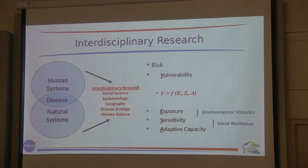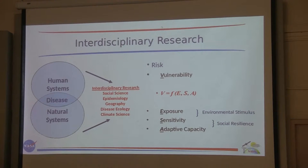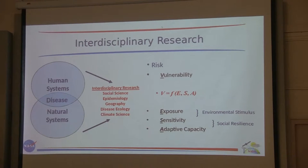All of this requires interdisciplinary research because diseases sit at the intersection of human systems and natural systems. Social scientists think about who is vulnerable and why. Epidemiologists discuss how people get infected and statistics. Biologists talk about the ecology of a vector or how a pathogen responds to environmental conditions or vaccines. Meteorologists and climatologists look at current conditions and forecast into the future. You need all of these perspectives.